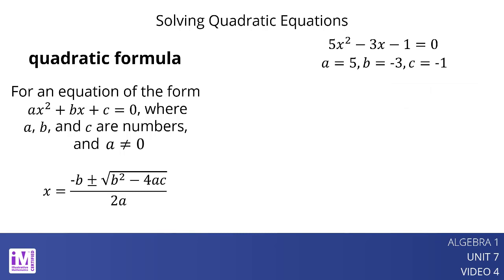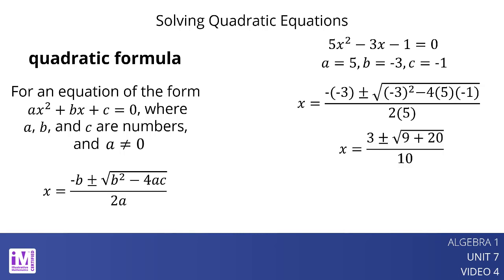First, we substitute the values of a, b, and c into the quadratic formula. Then, we evaluate each part of the expression. So, x equals 3 plus or minus the square root of 29 all over 10. A calculator gives the approximate values of x as 0.84 and negative 0.24.